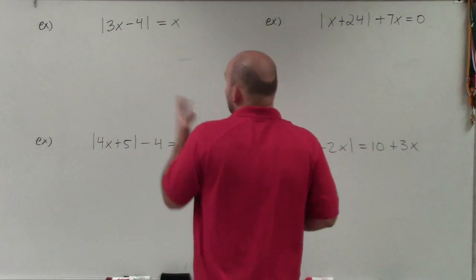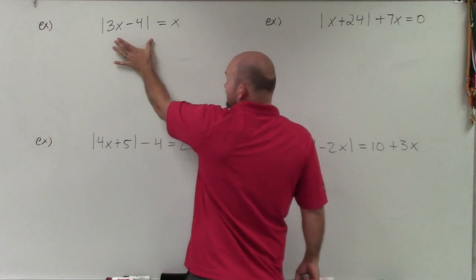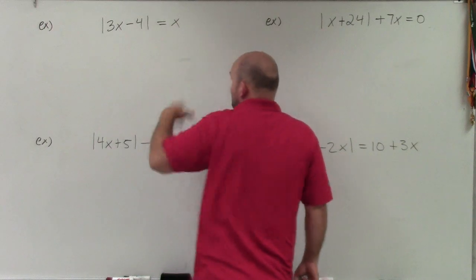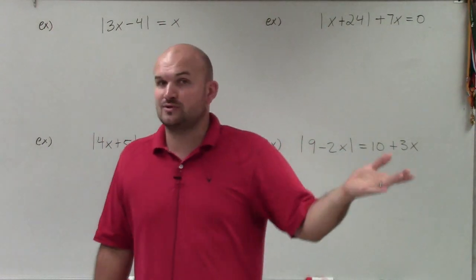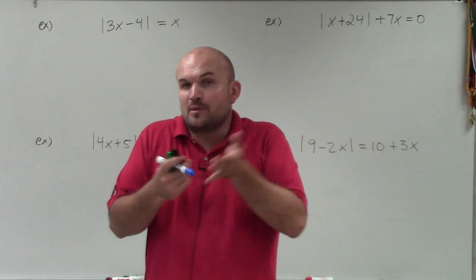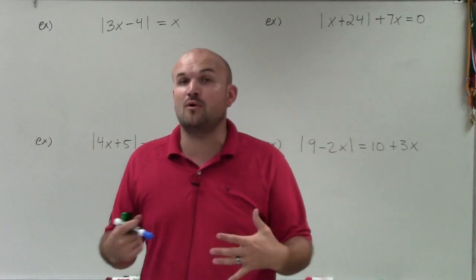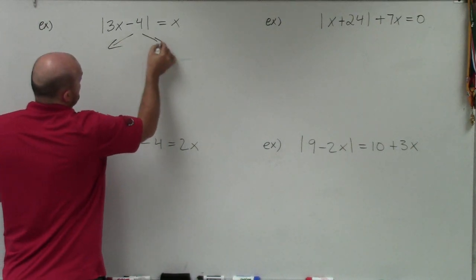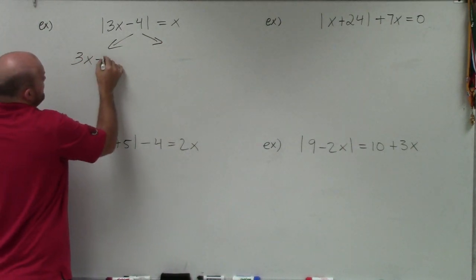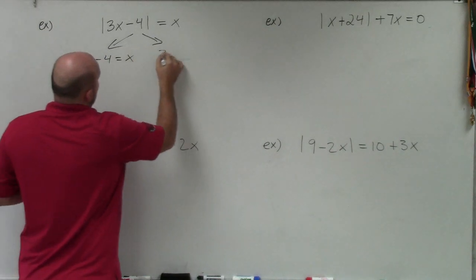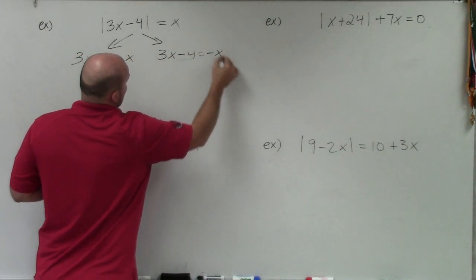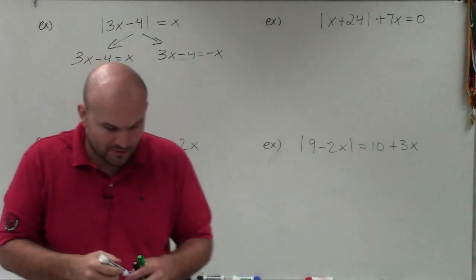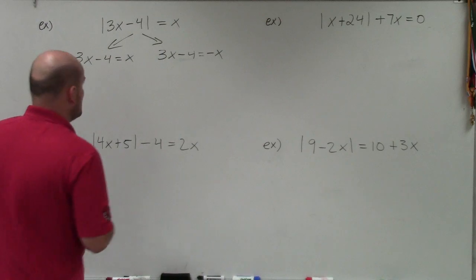For the first problem, we're kind of fortunate — we have the absolute value already isolated. That means there's nothing else on the side of the absolute value; it's just absolute value equals x. Previously we've done problems where it's equal to a number, but now it's equal to an x. The process we've done before is going to be exactly the same — you're going to create your two cases. So we do 3x minus 4 equals x, and 3x minus 4 equals negative x. We go back through and use our inverse operations to solve.